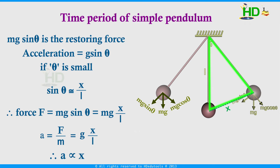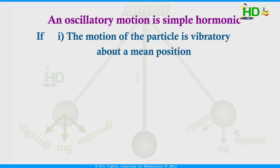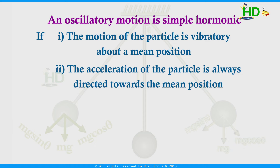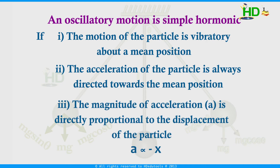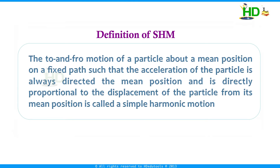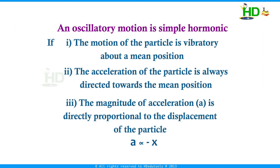Therefore, in the case of the simple pendulum: the motion is vibratory about a mean position, the acceleration is always directed towards the mean position, and the magnitude of acceleration is directly proportional to the displacement. Since these three conditions are satisfied, we can consider the simple pendulum as having simple harmonic motion. In simple terms, the to and fro motion of a particle about a mean position on a fixed path, such that the acceleration is always directed towards the mean position and is directly proportional to the displacement from the mean position, is called simple harmonic motion.